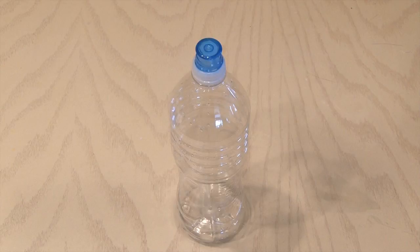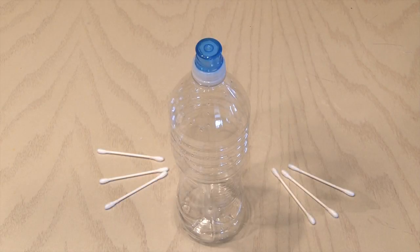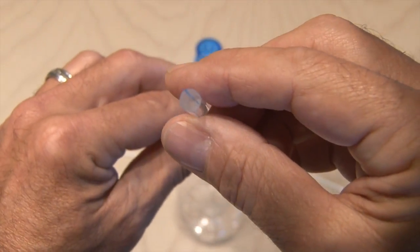To make the Easy Water Bottle Shooter, you're going to need a plastic water bottle, some regular old cotton swabs or q-tips, and a drinking straw. Just about any size should work.